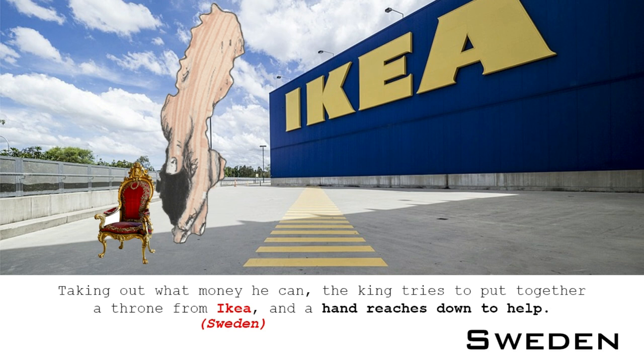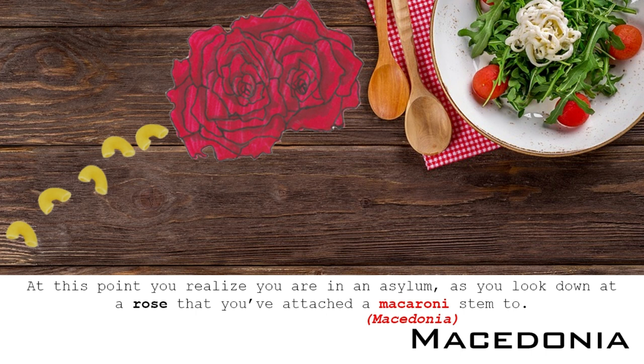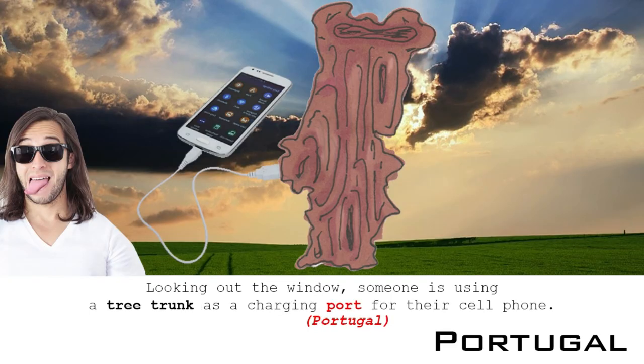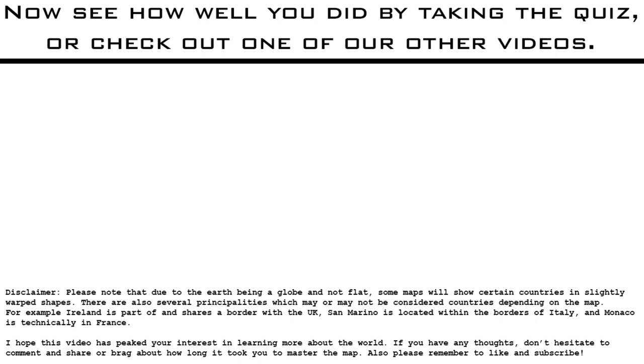Sweden: Taking out what money he can, the king tries to put together a throne from IKEA, and a hand reaches down to help. Macedonia: At this point, you realize you're in an asylum, and you look down at a rose that you've attached a macaroni stem to. Portugal: Looking out the window, someone is using a tree trunk as a charging port for their cell phone. Now see how well you did by taking the quiz. If you keep track of your score, please let everyone know in the comments how you did.